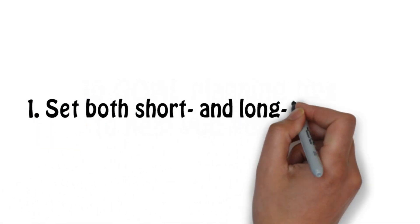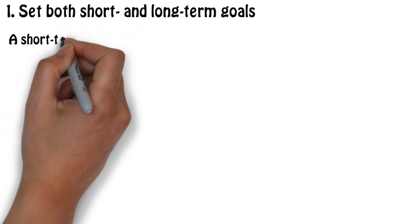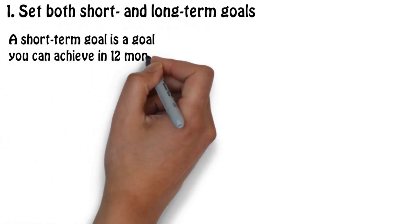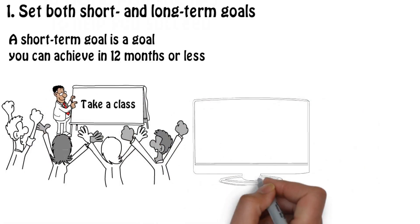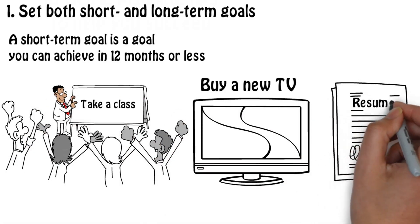Number 1: Set both short and long-term goals. A short-term goal is a goal you can achieve in 12 months or less. For example, take a class, buy a new TV, write my resume.